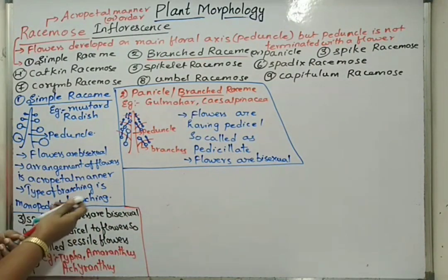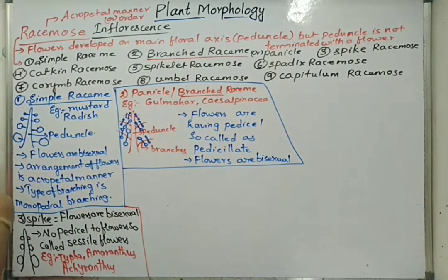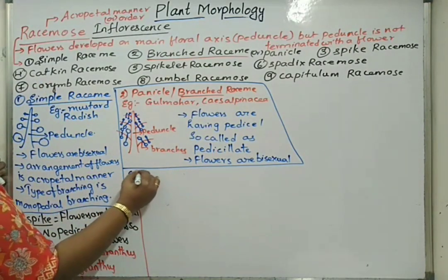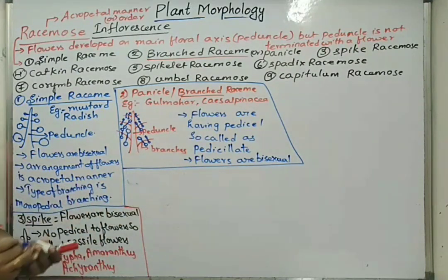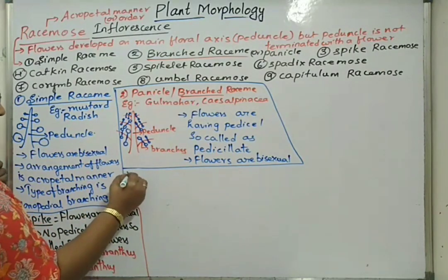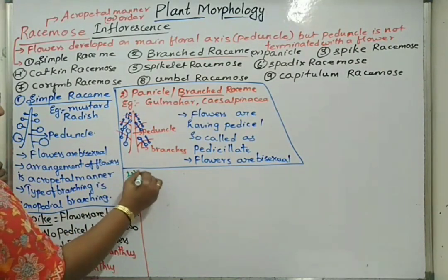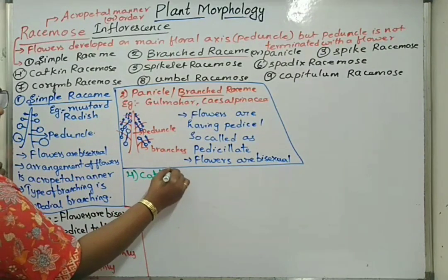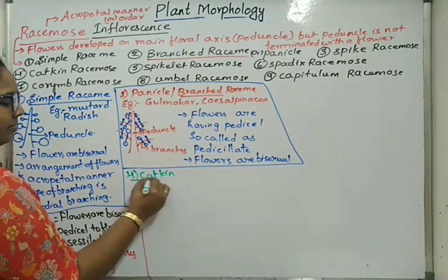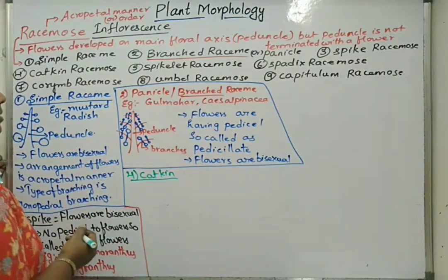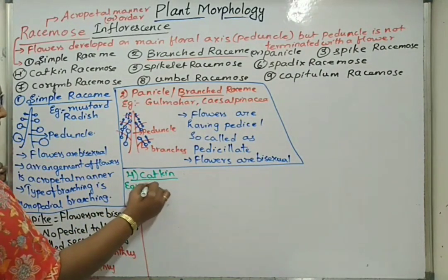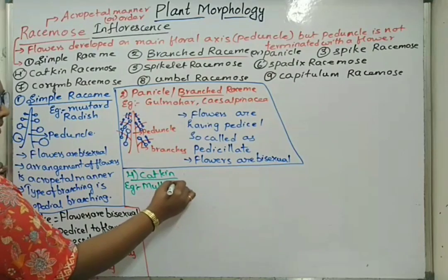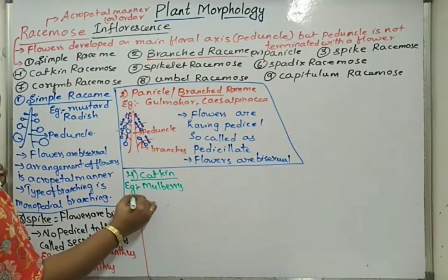Next, fourth one: catkin inflorescence. Catkin type of racemose inflorescence is seen in case of Mulberry and Morus.